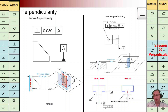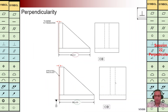At the bottom right we have another example with the perpendicularity symbol set to 0.1. The axis of this feature should be perpendicular to datum A. We are going to have two boundaries perpendicular to A with a distance of 0.1, and the axis of this feature should be within that interval.